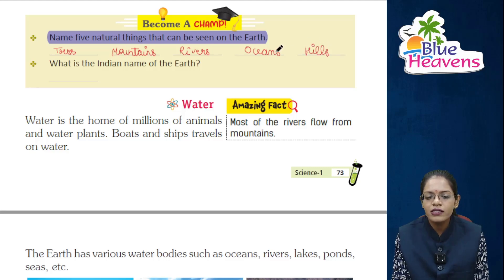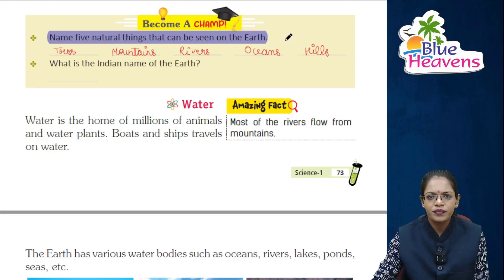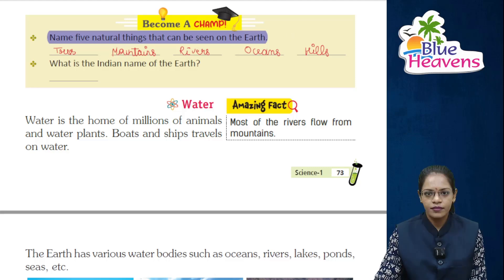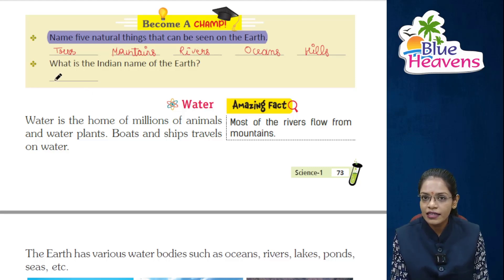Next question: What is the Indian name of the Earth? The Indian name of the Earth is Prithvi.